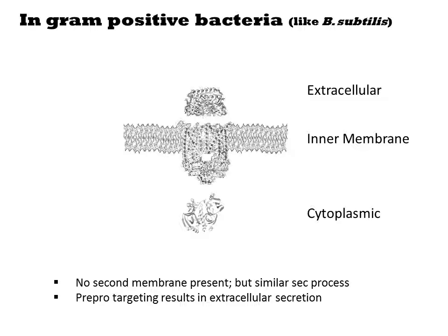In a gram-positive bacterium, there is no second membrane, and thus there are only three compartments: the cytoplasm, the inner membrane, and the extracellular environment. The same basic set of proteins and localization signals that directed proteins to the periplasm in gram-negatives will target a protein for extracellular secretion in a gram-positive organism. Thus, secreting proteins is usually much easier to achieve in a gram-positive rather than a gram-negative bacterium. Industrially, commodity proteins like proteases used in detergent are usually produced in a gram-positive Bacillus strain.